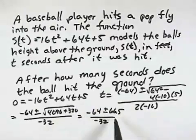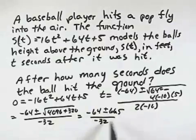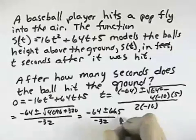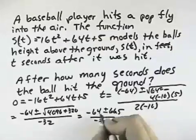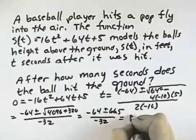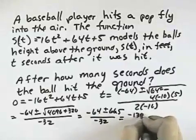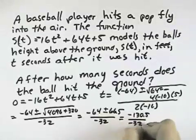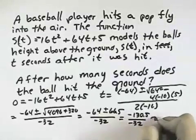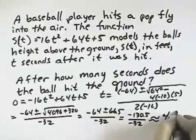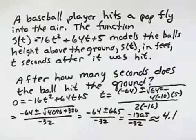Negative 64 plus 66.5 would be positive over a negative — that is a negative result. We can't have a negative time, and therefore we'll just take negative 64 minus 66.5, which is negative 130.5 over negative 32, and we round that off. That equals 4.1 when rounded to the tenths place. So the answer is 4.1 seconds.